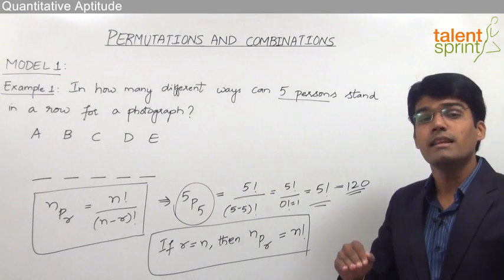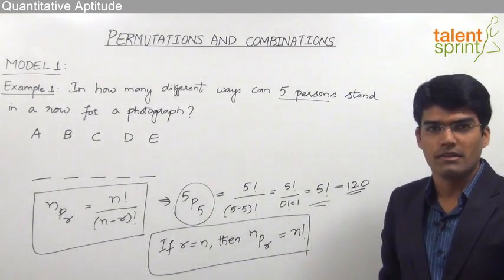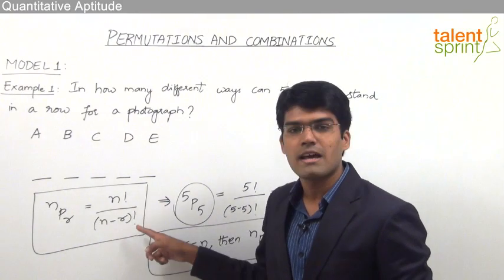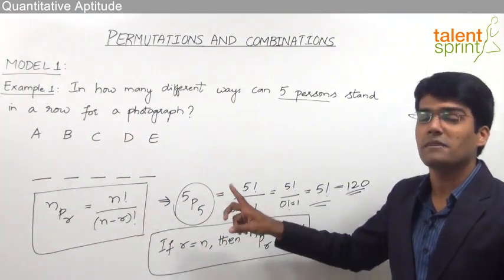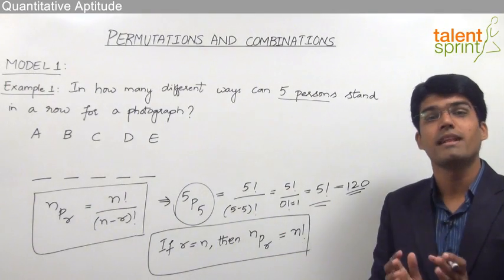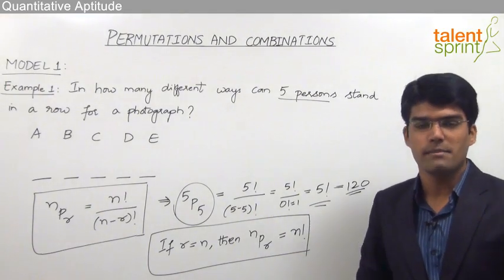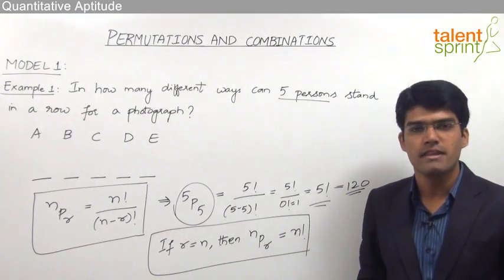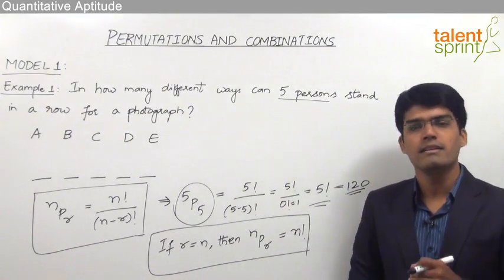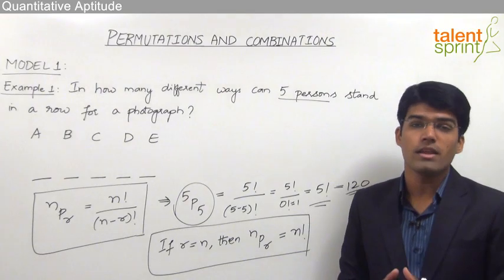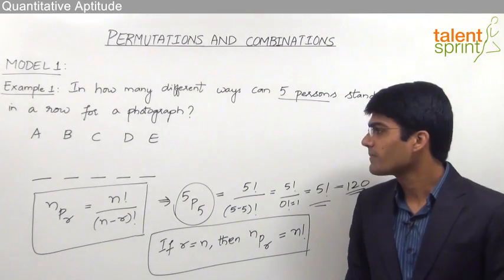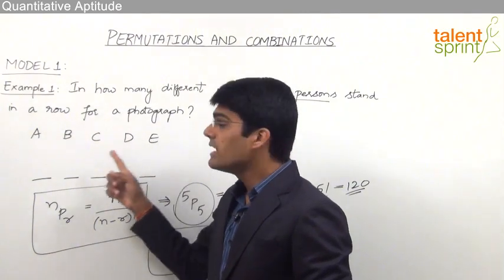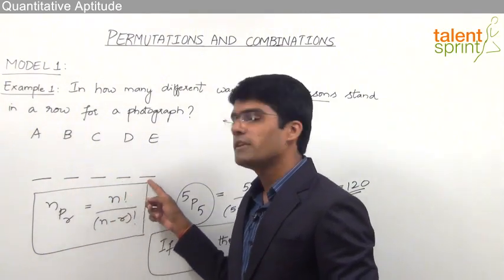Now let us see the other way of solving this question — without using the formula, using the principle of multiplication instead. We know that if one action can be done in M ways and another in N ways, then both actions together can be done in M into N ways. Here we have 5 persons A, B, C, D and E and 5 positions 1, 2, 3, 4 and 5.